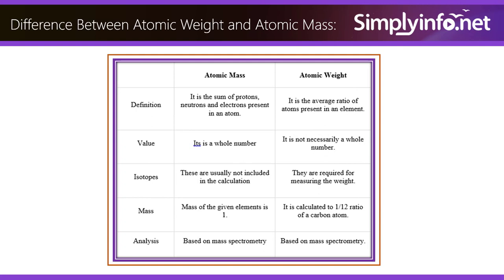Difference between atomic weight and atomic mass. Atomic mass is the sum of protons, neutrons, and electrons present in an atom. Atomic weight is the average ratio of atoms present in an element.